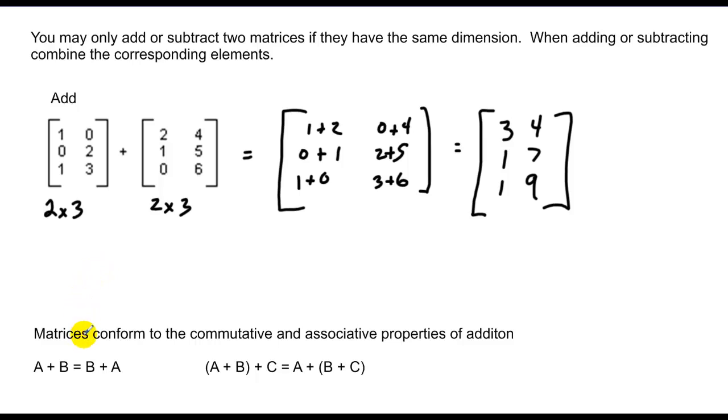For matrices, order doesn't affect any addition in matrices, nor does any grouping of addition affect any matrix operations. Matrices conform to the commutative and associative properties of addition.